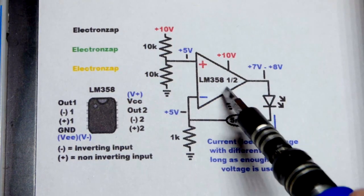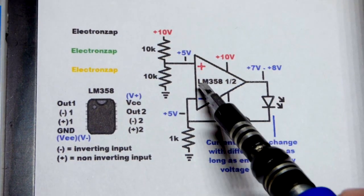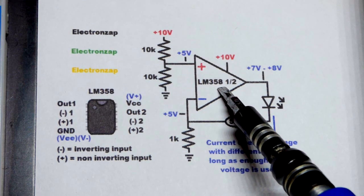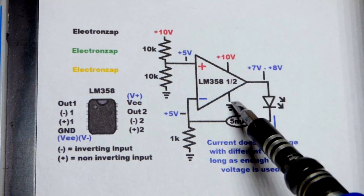So now in this video we're going to look at using an op amp as a current source. We're going to use the LM358, a single supply op amp, which we're going to use here.